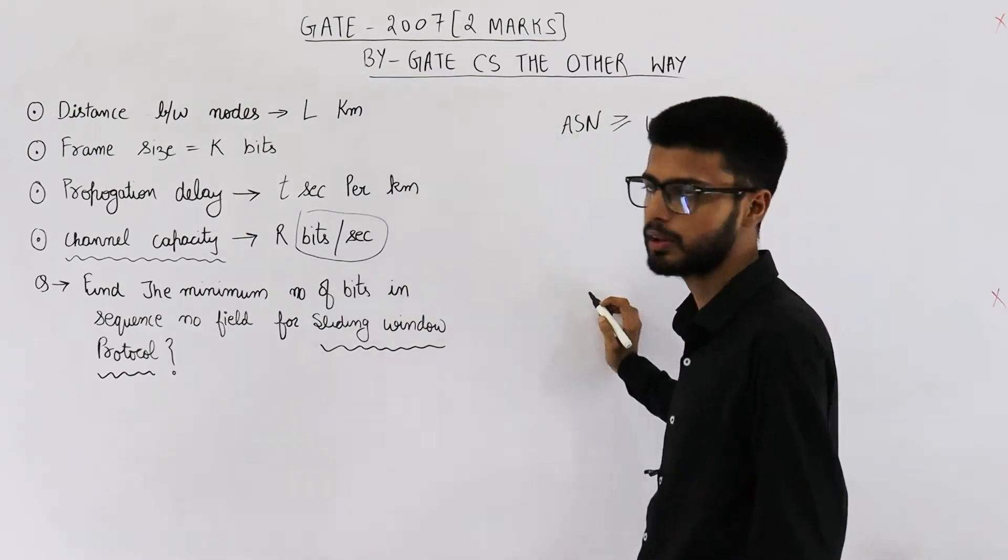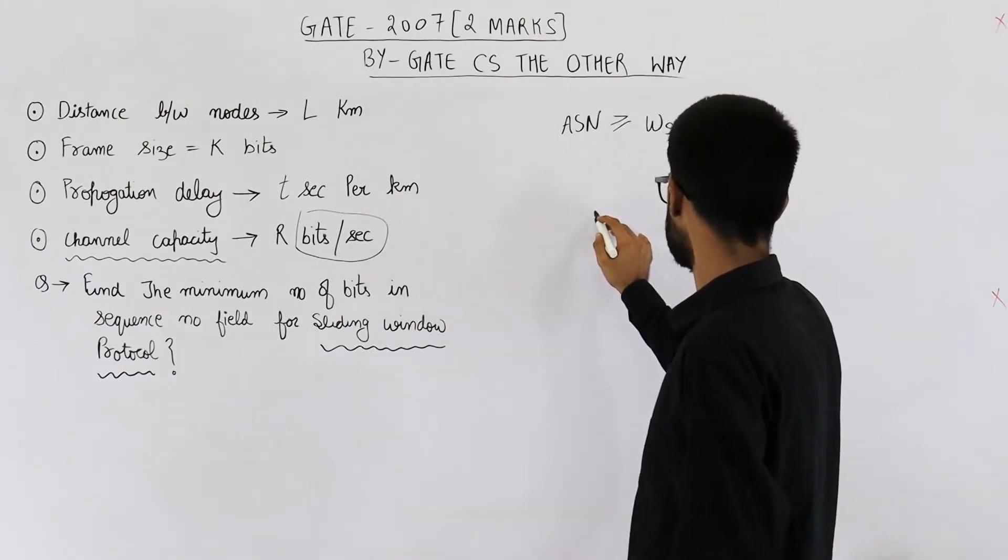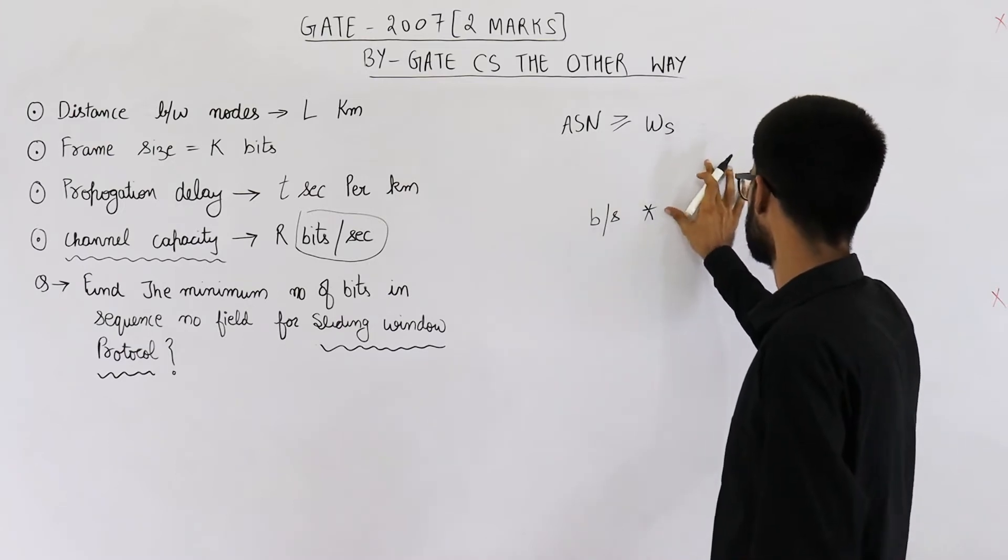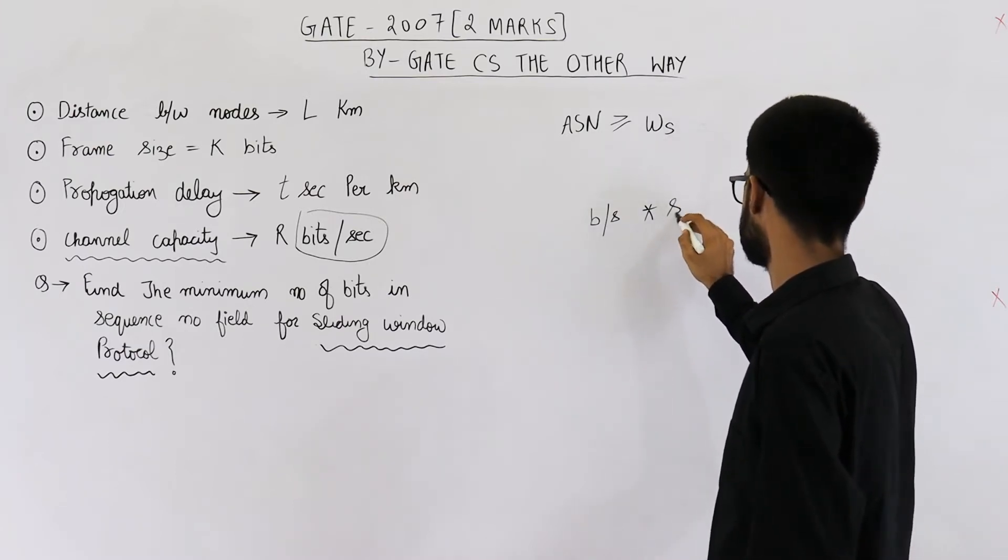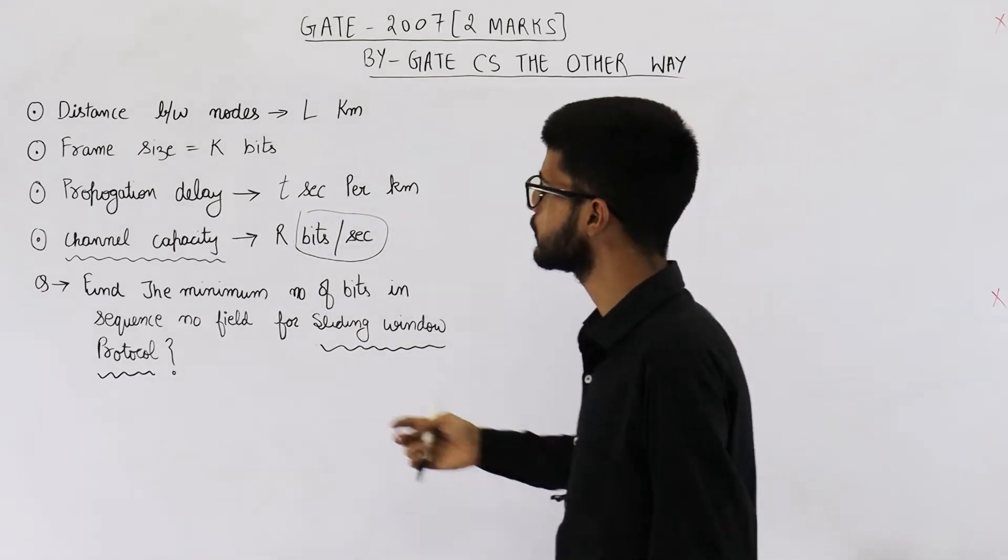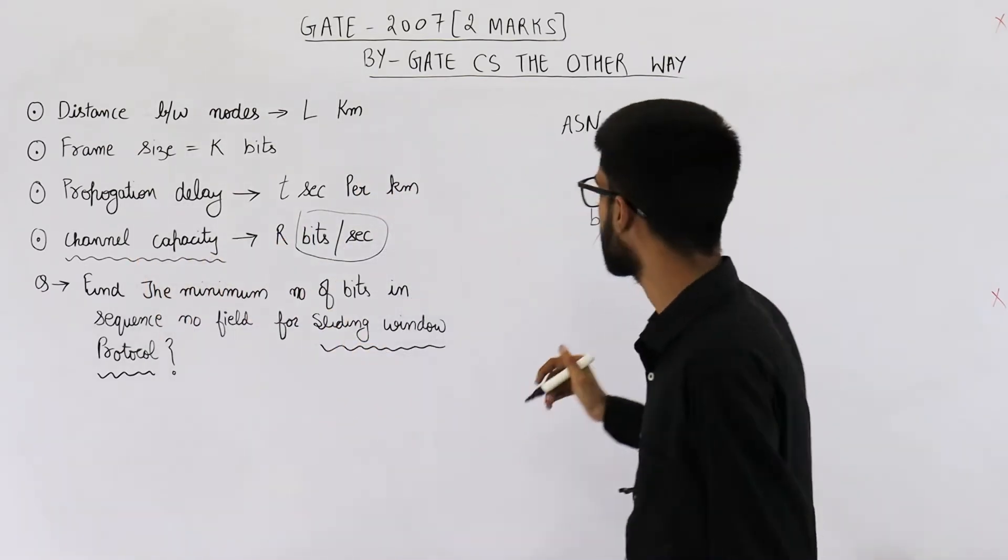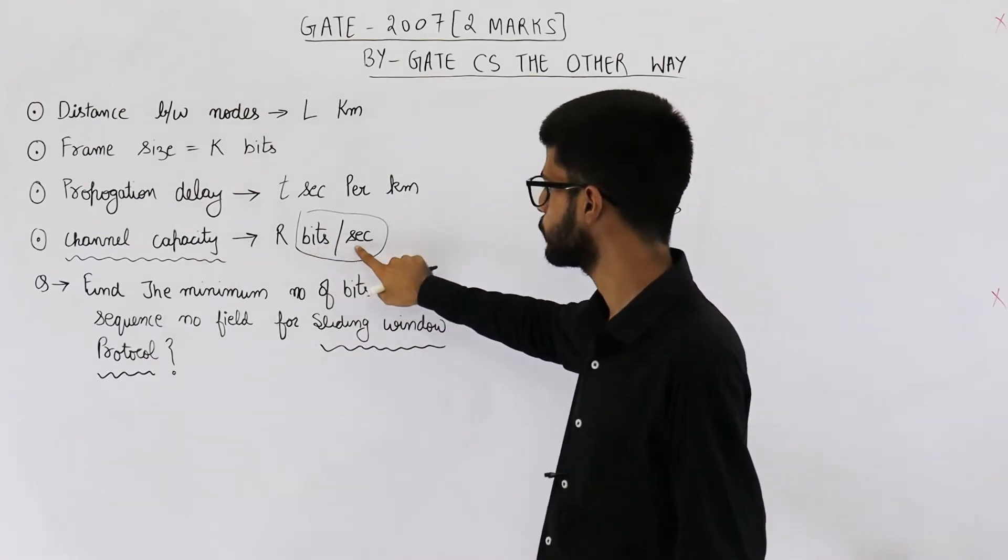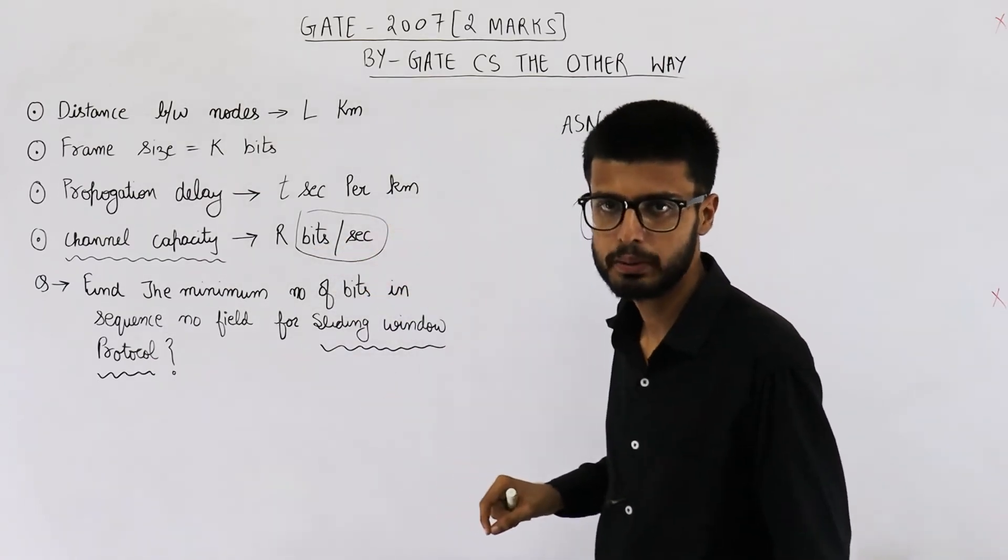Because channel capacity can be written as bandwidth delay product. So bandwidth will have units as bits per second. And delay, that means the propagation delay, will have units seconds. Seconds and per second can be cancelled. You can see channel capacity will surely have unit bits. But here the unit is bits per second. So this one has to be bandwidth.